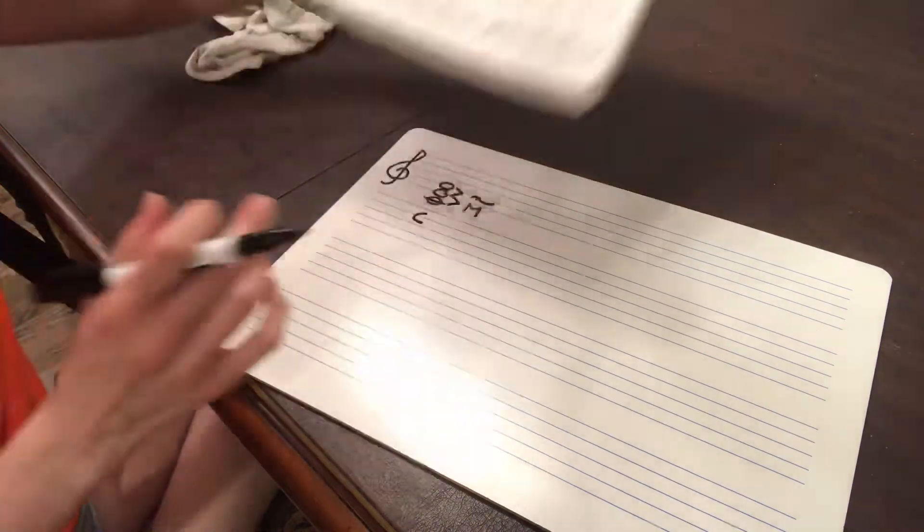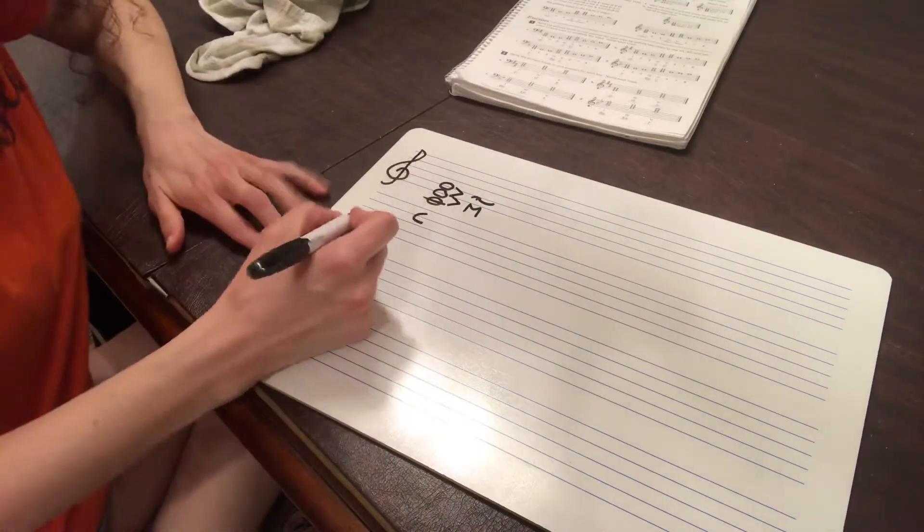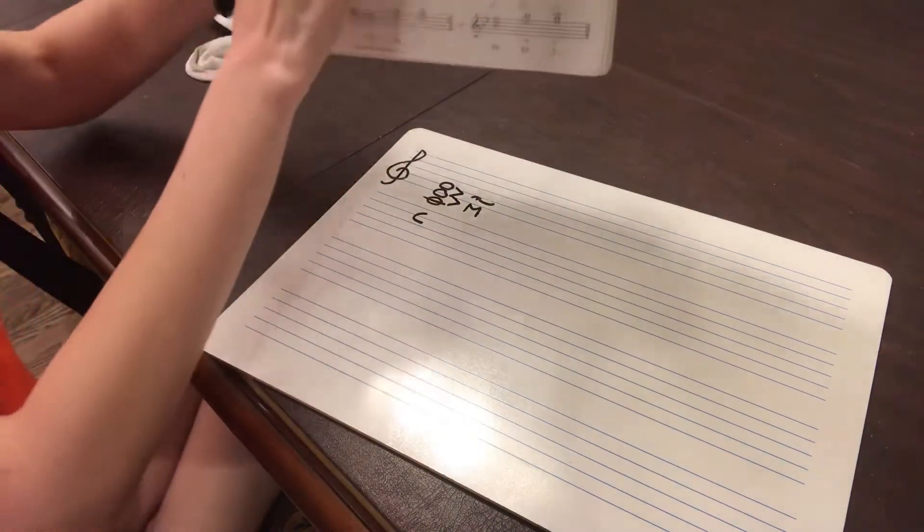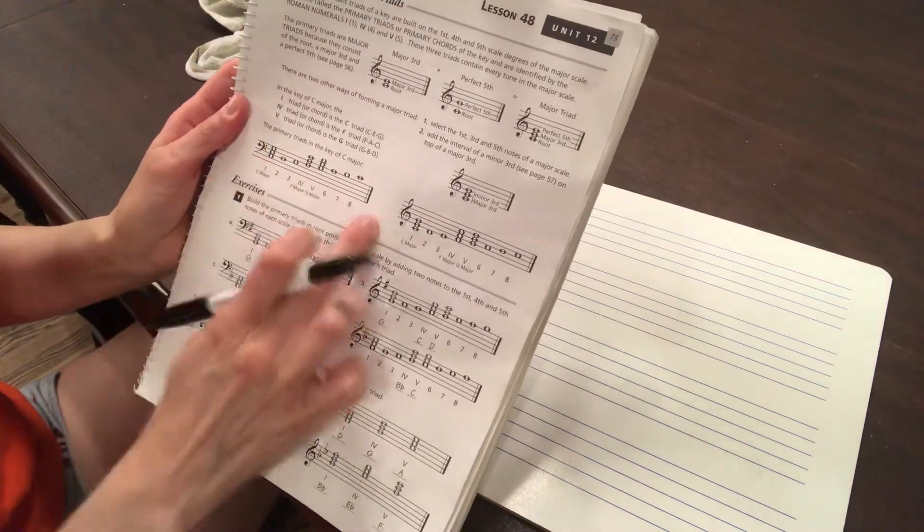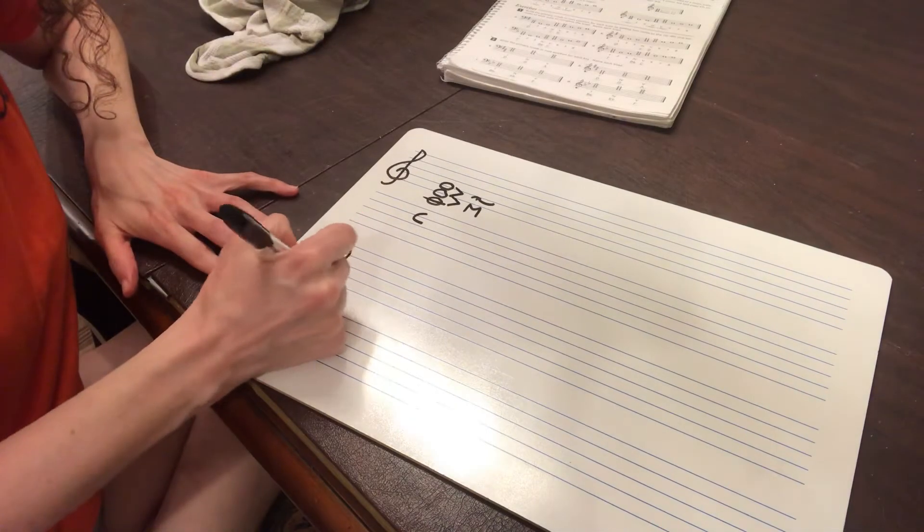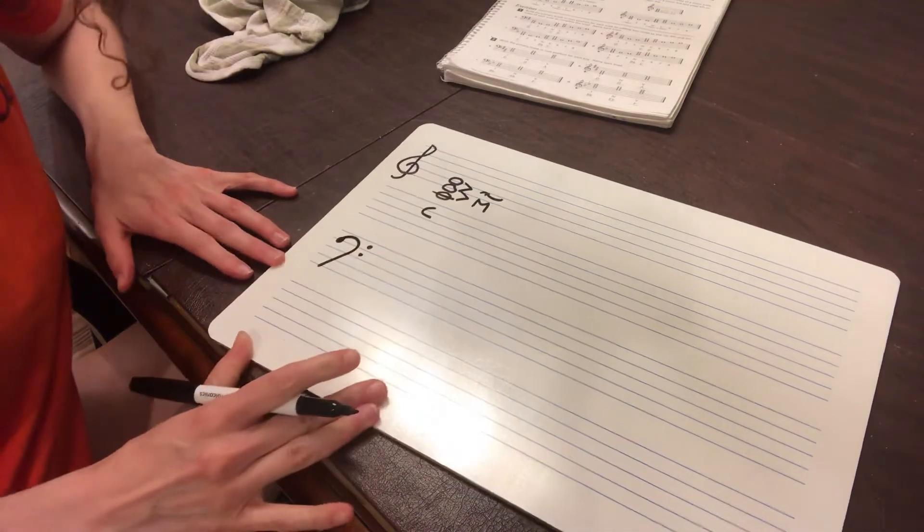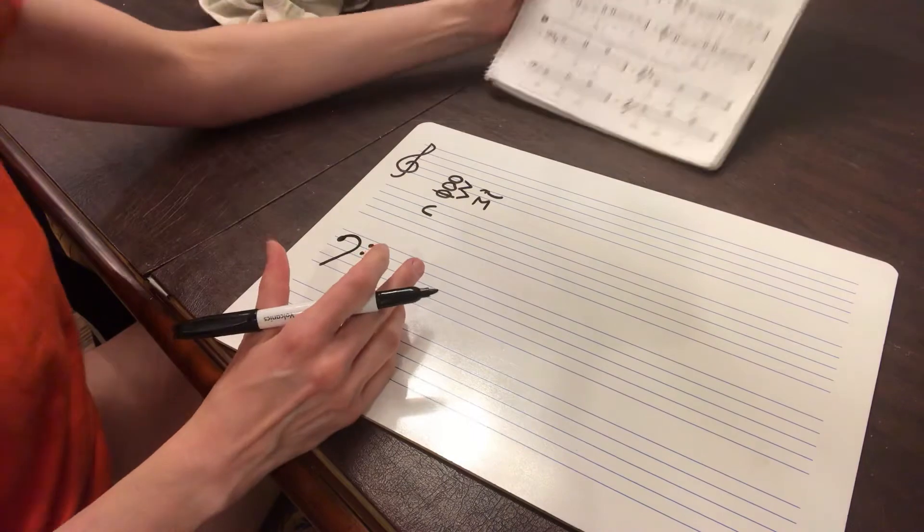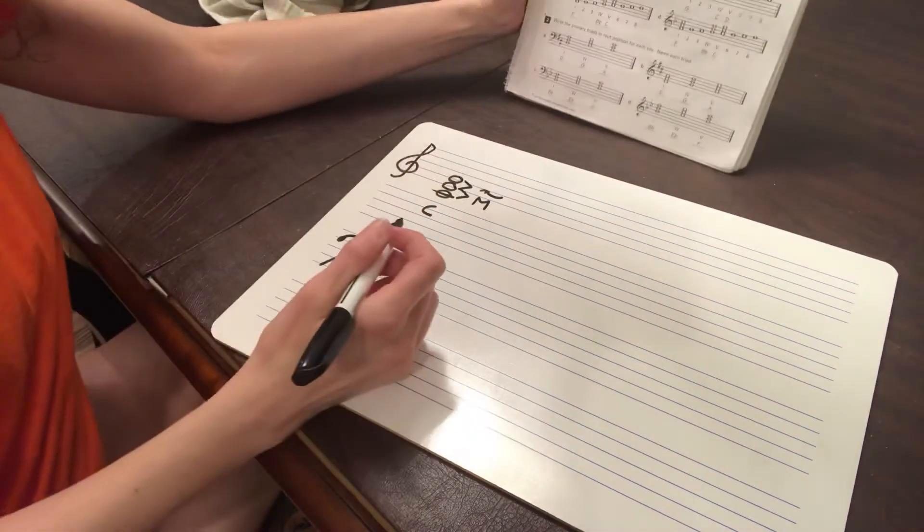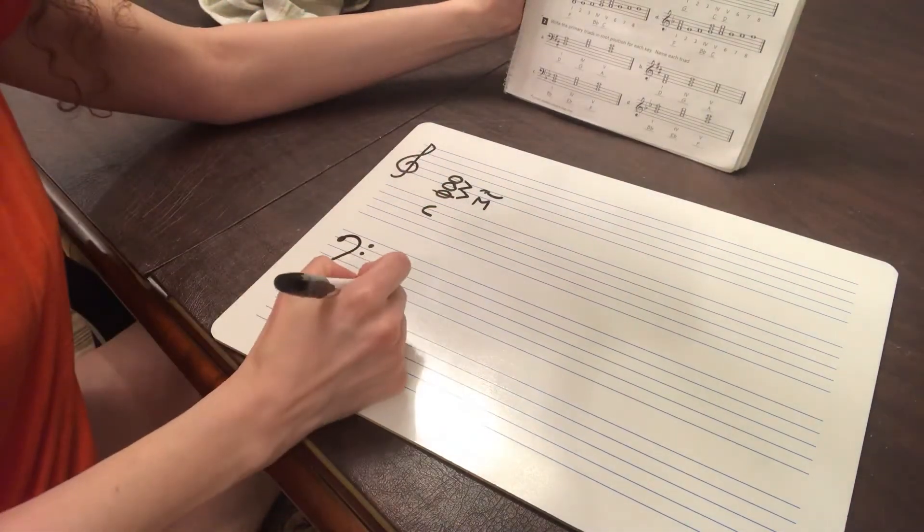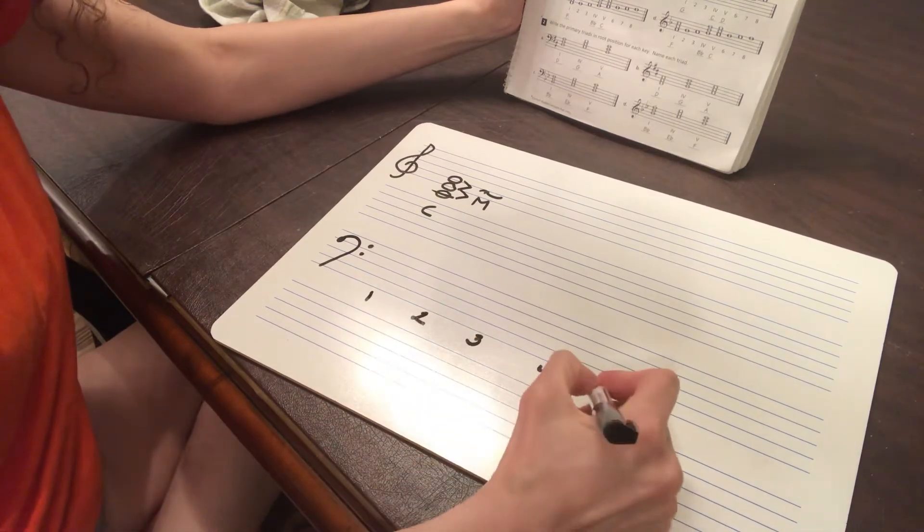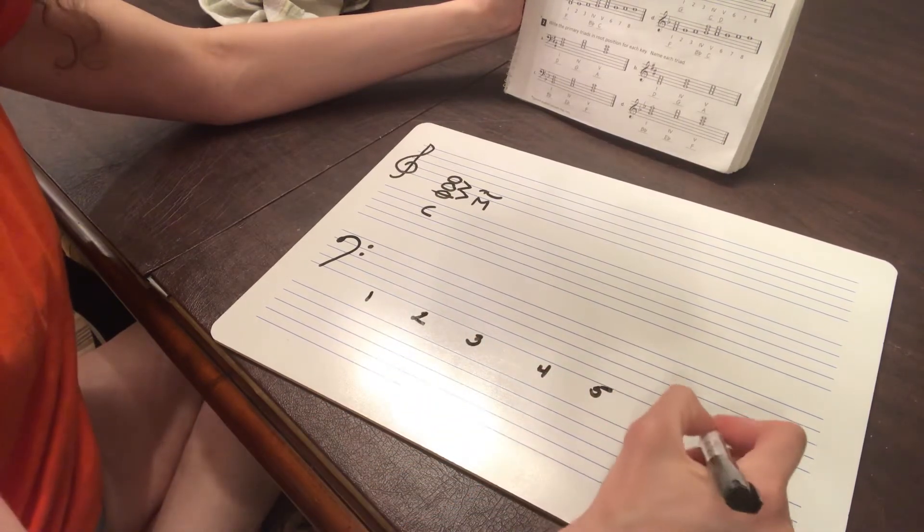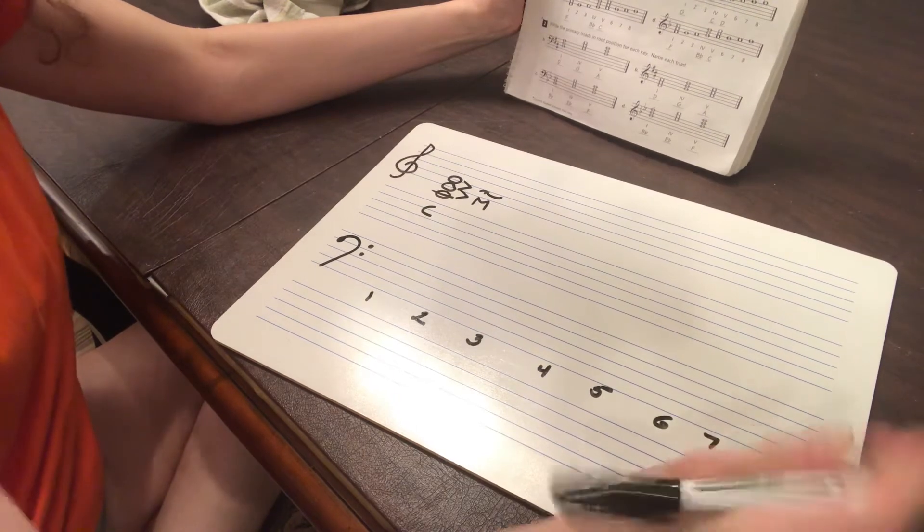So when you're looking here, let's do this one right here on the bottom. It's in C major in the bass clef. So right here, C major. So I know I'm in the key of C, right? And so 1, 2, 3, 4, 5, 6, 7, 8, or 1.